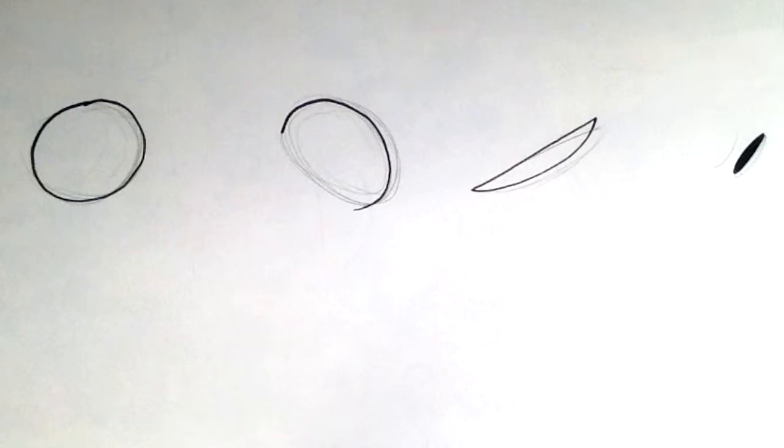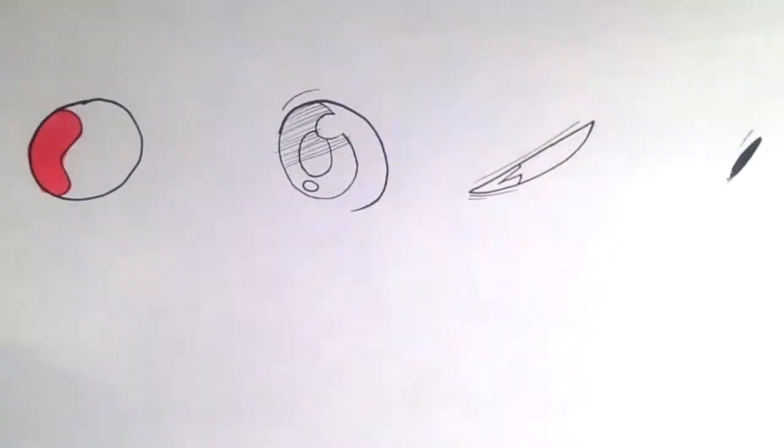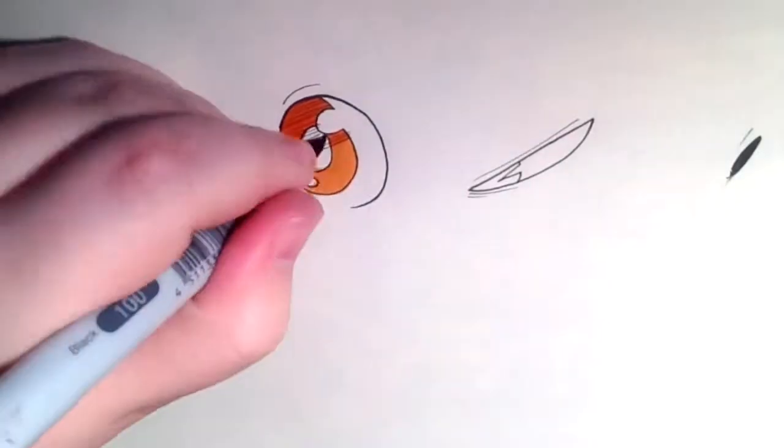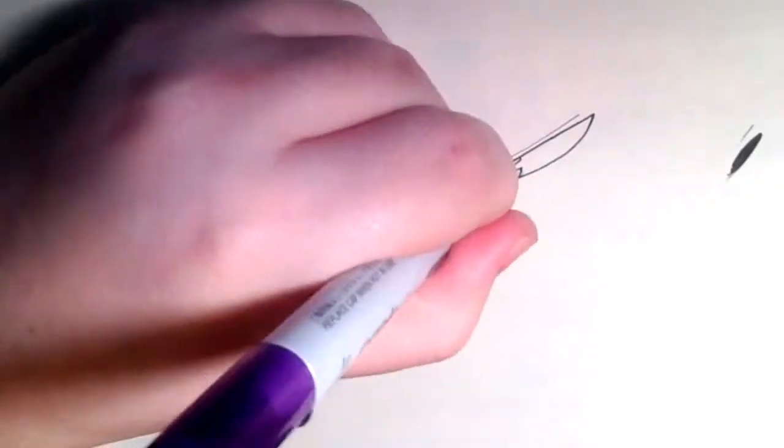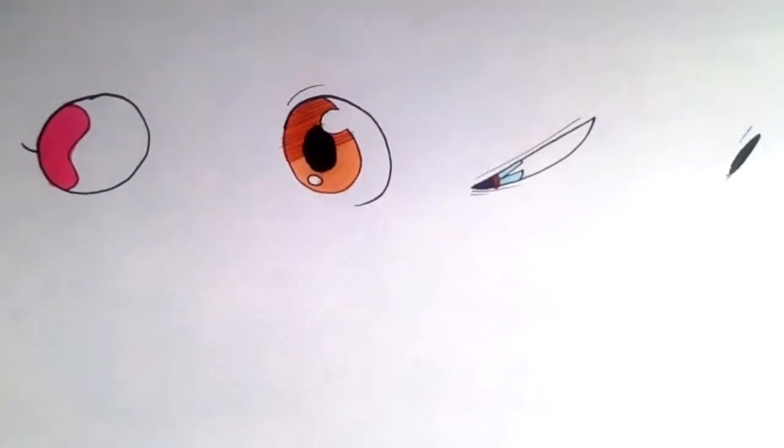Also, you have the pupil and iris of the eye. There are tons of different ways to draw these, and you can come up with your own if you want. But here are a few examples of the pupils of the eyes. Remember, eyes don't even have to have the sclera or the whites of the eyes.